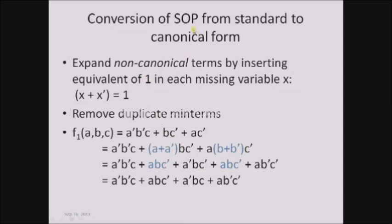Conversion of sum of products from standard to canonical form. What we have to do is: expand non-canonical terms by inserting the equivalent of one in each missing variable x, that is x plus x-complement equals one, then remove duplicate min terms. These are the two things we have to follow to convert a standard SOP to canonical SOP. So we have to insert the equivalent of one in each missing variable x.